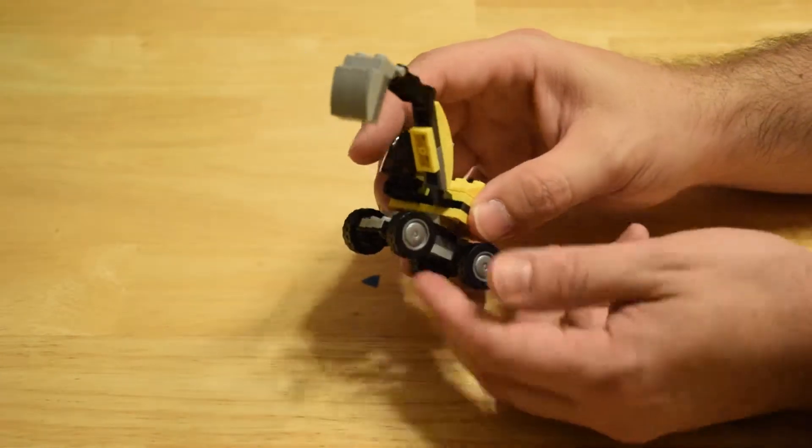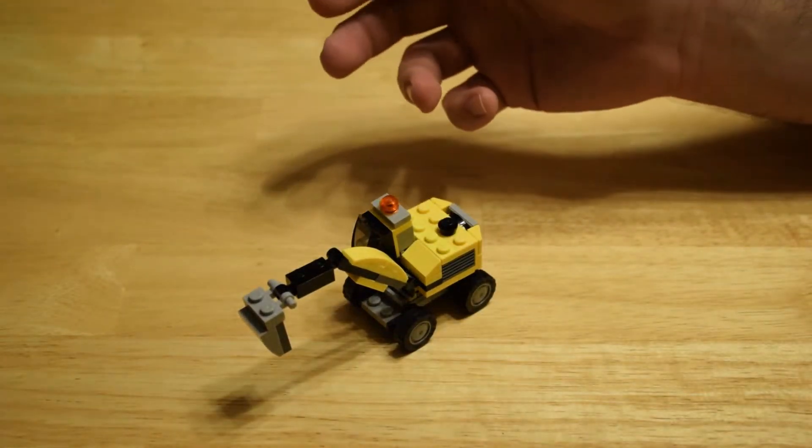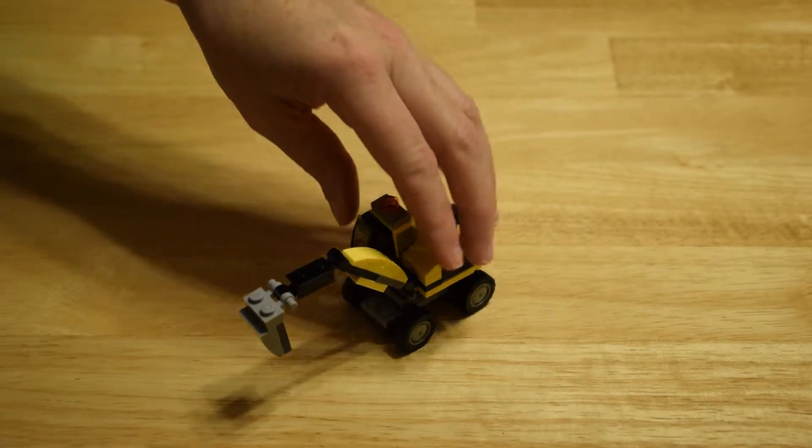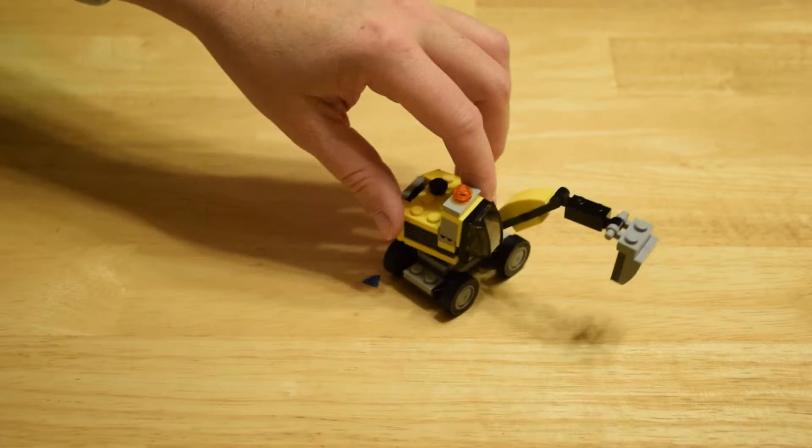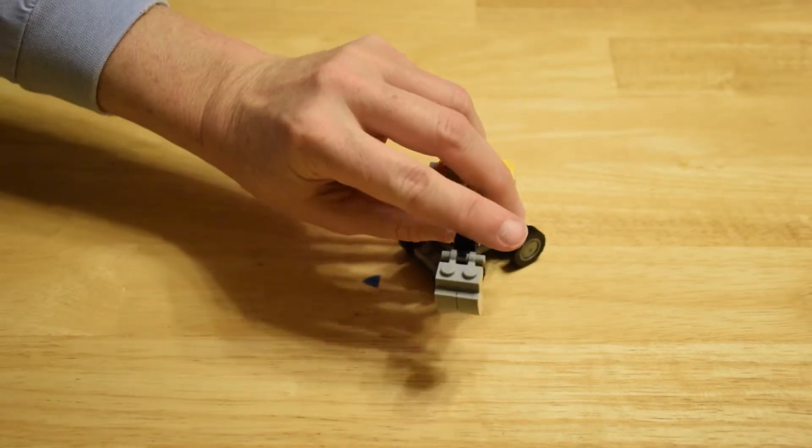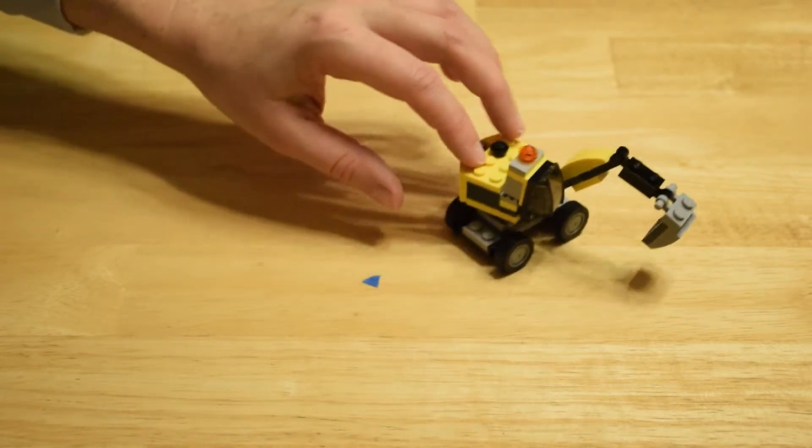These little wheels you can pop off, but it looks so close to an excavator that you would see in the real world. Lego's come a long way, I think, and they have a lot of vehicles that move like real vehicles. They just look really realistic. They're really cool.